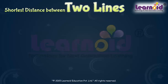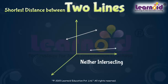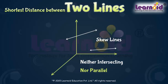In a 2D plane, lines are either intersecting or parallel. But in 3D space, there are lines which are neither intersecting nor parallel. Such a pair of lines are non-coplanar and are called skew lines.